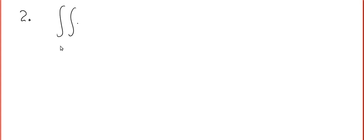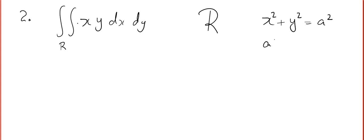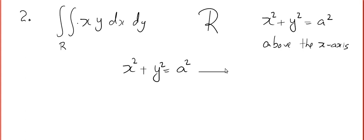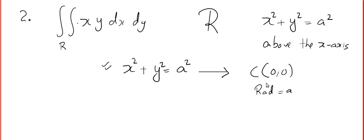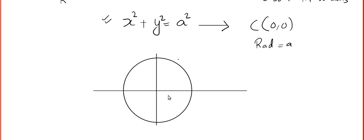Now time for another question. Evaluate the double integral over R of x·y dx dy. The region R is given by the circle above the x-axis. x² + y² = a² represents a circle with center (0, 0) and radius a.